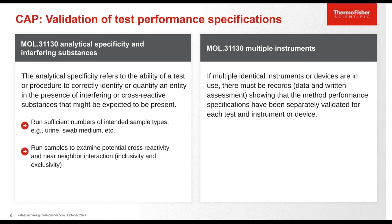Analytical specificity and interfering substances refers to the ability of a test to correctly identify or quantify an entity in the presence of interfering or cross-reactive activity of substances that might be expected to be present. Running sufficient numbers of samples of your intended sample type will help here. You want to examine potential cross-reactivity and near-neighbor interaction to establish inclusivity and exclusivity. When it comes to multiple instruments, even if they are identical, there must be records showing the exact serial number that each instrument was separately validated.